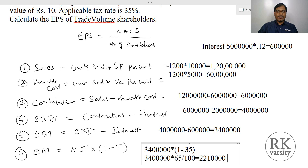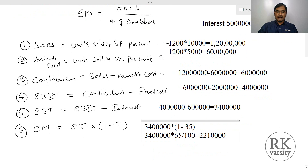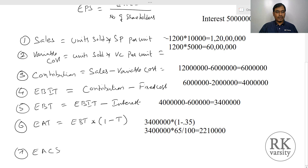As there are no preference shareholders, Earnings Available to Equity Shareholders equals Earnings After Tax. So Earnings Available to Common Shareholders equals 22 lakhs 10,000.